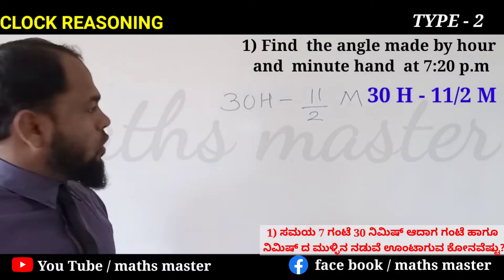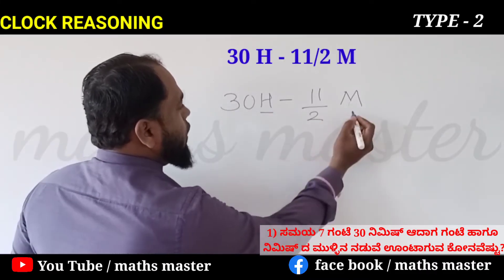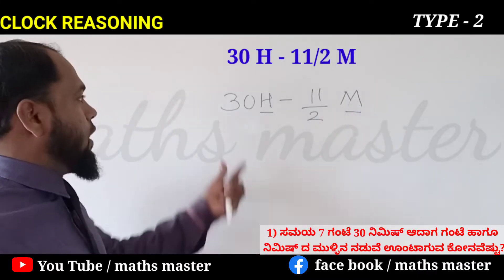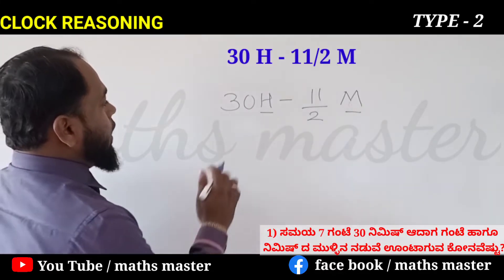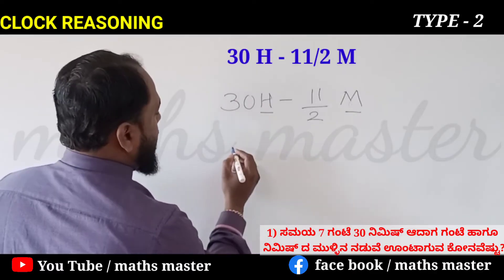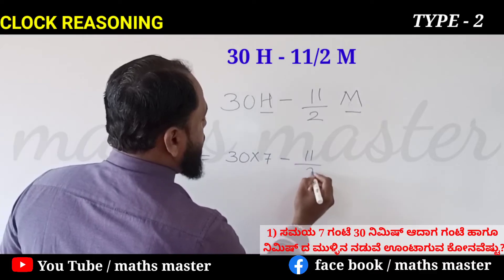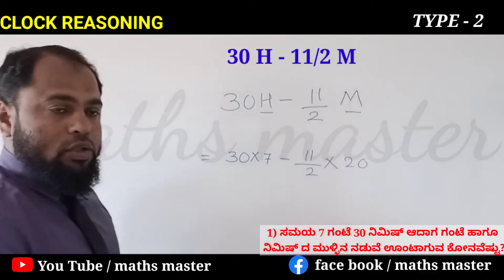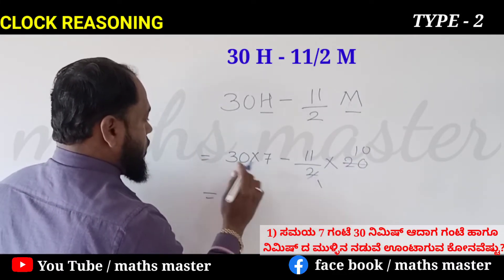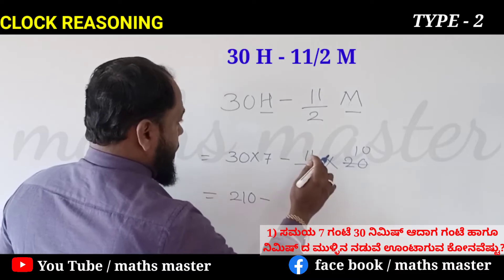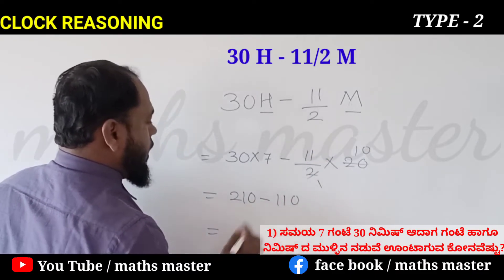The formula is: 30H minus 11 by 2 into M. H is the hour and M is the minute. So for 7 hours and 20 minutes: 30 into 7 minus 11 by 2 into 20. That gives 210 minus 110, which equals 100 degrees.